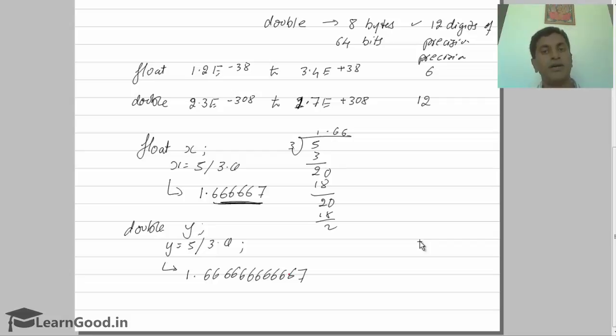Double can hold bigger accuracy and store more accurate values compared to float.